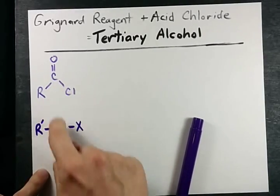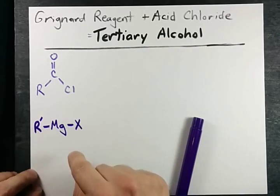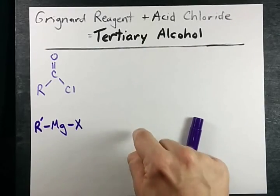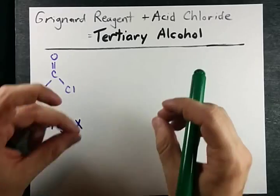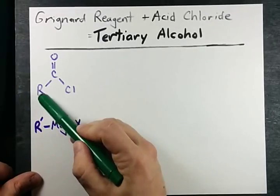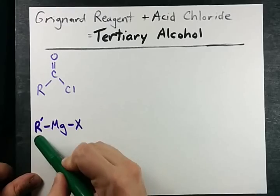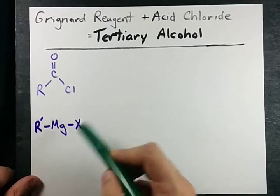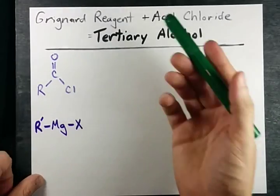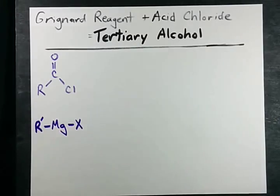When you mix those with Grignard reagents you'll end up with a tertiary alcohol, and I'm going to show you exactly how right now. Spoiler alert: the carbon is connected to R and two R' groups, however long they are, and this O is going to turn into an OH. But let's see how that happens.